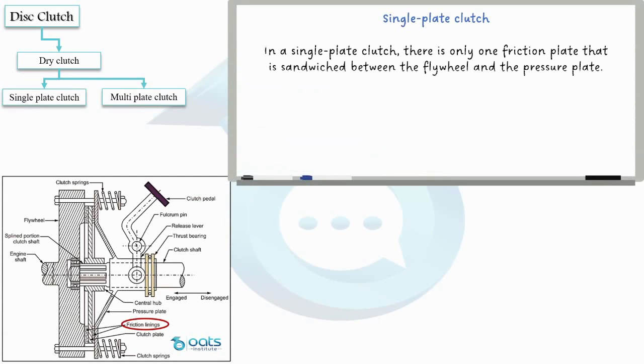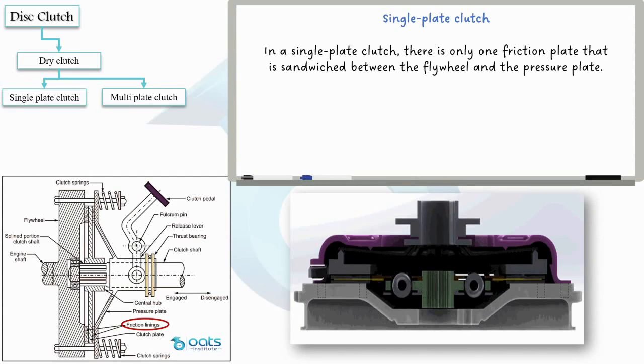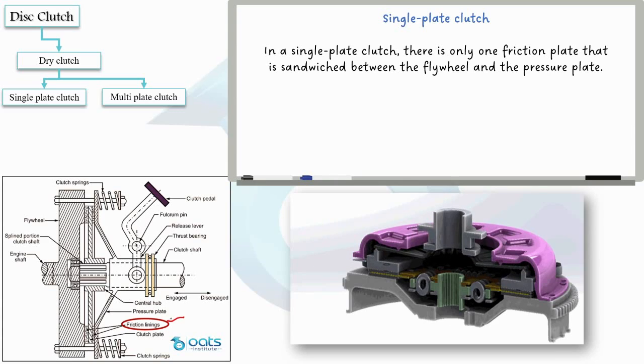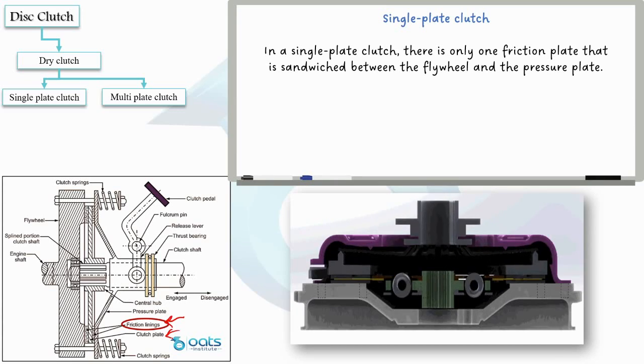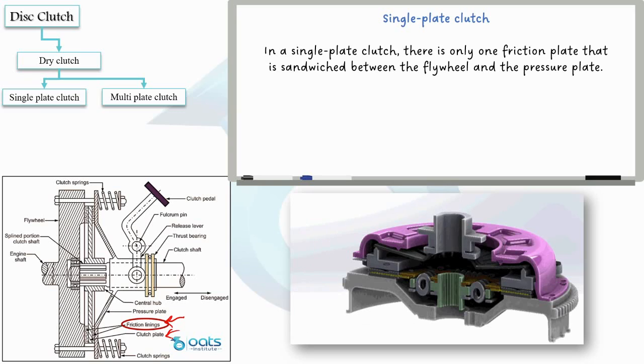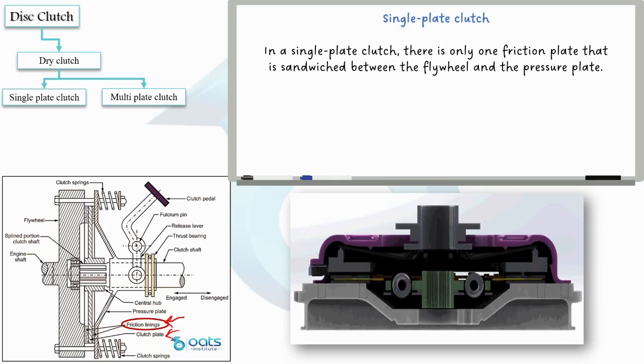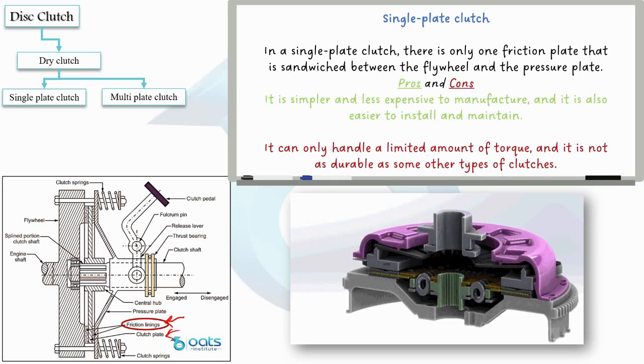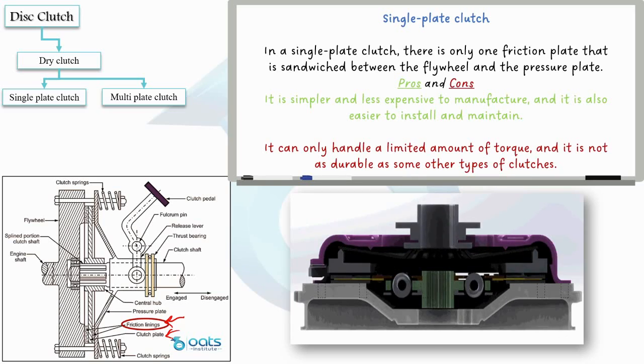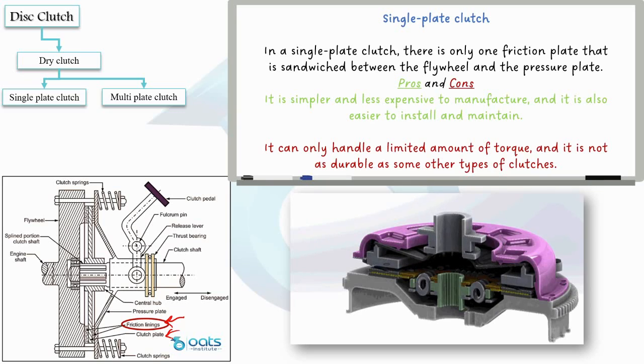The single plate clutch, as the name suggests, consists of a single clutch plate sandwiched between the flywheel and the pressure plate. An example is shown here, where the clutch plate has a friction material on both sides that helps in transmitting the torque from the engine to the transmission. While it offers simplicity and cost effectiveness, it has its limitations in terms of torque handling and durability.